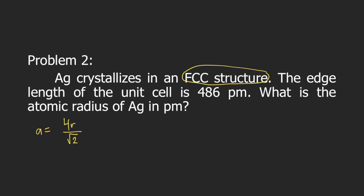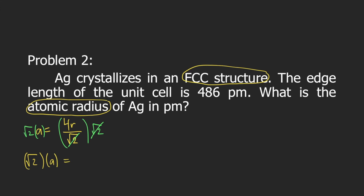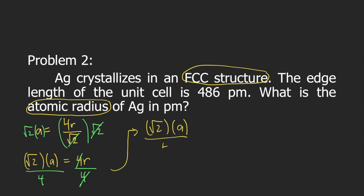This time, the problem is asking for the atomic radius — it's asking for R. So we need to rearrange the equation to solve for R. First, multiply both sides of the equation by square root of 2. Square root of 2 will cancel on the right side, and your equation becomes square root of 2 times A is equal to 4R. To solve for R, divide both sides of the equation by 4. Four cancels on the right side. Therefore, our equation becomes square root of 2 times A divided by 4 is equal to R.